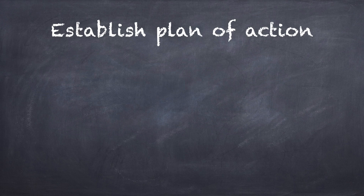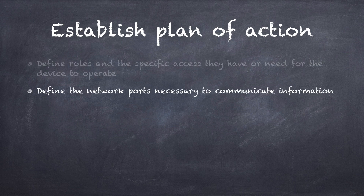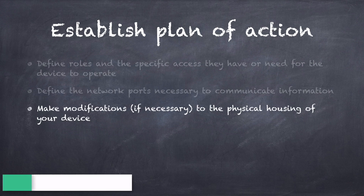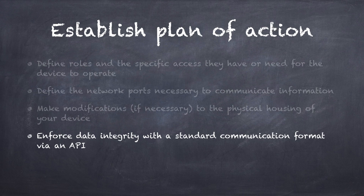Once you've enumerated your solutions and documented your legal requirements, just like with threat modeling, you need to establish a plan of action. This plan and its results will be paramount if and when you are challenged about the privacy of your solution. Define the roles and specific access they have or need, define the network ports necessary to communicate information, make modifications to the physical housing of your device if necessary, and enforce data integrity with a standard communication format — preferably over an API. Sometimes an action is simply a documented policy and doesn't always have to be technical.